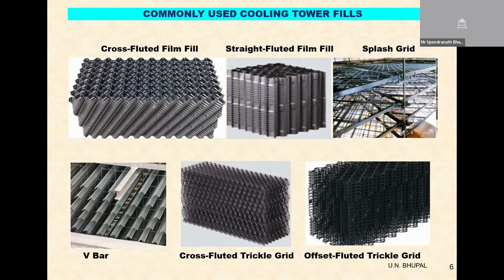The last fill is the offset fluted, which is similar to a straight-fluted film fill — polypropylene mesh sheets have vertical flutes. The thermal performance is obviously quite poor for this vertical-fluted trickle grid compared to the cross-fluted trickle grid. The cross-fluted trickle grid has both high heat transfer surface and low pressure drop, which is a real advancement for the cooling tower industry. Right now this particular fill is quite popular, but it is quite expensive.